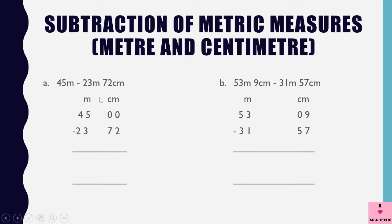As I told you while doing addition, in centimeters we need to have two columns. So 45 meters is written as 45 meters 00 centimeters. And 23 meters 72 centimeters is written as 23 meters and 72 centimeters.